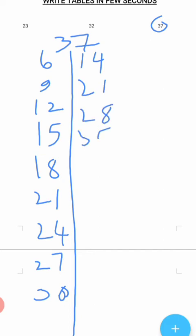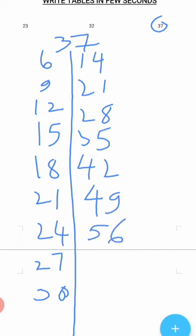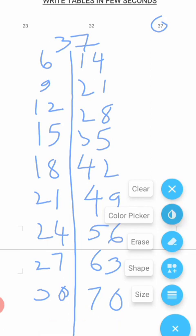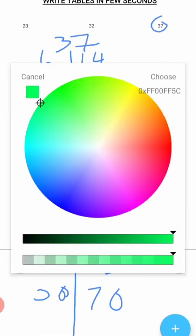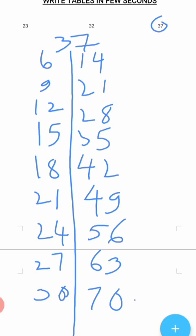Table of 7: 7 times 5 is 35, 7 times 6 is 42, 7 times 7 is 49, 7 times 8 is 56, 7 times 9 is 63, 7 times 10 is 70. Now what we have to do first is take the ones-place digit, which here is 7.